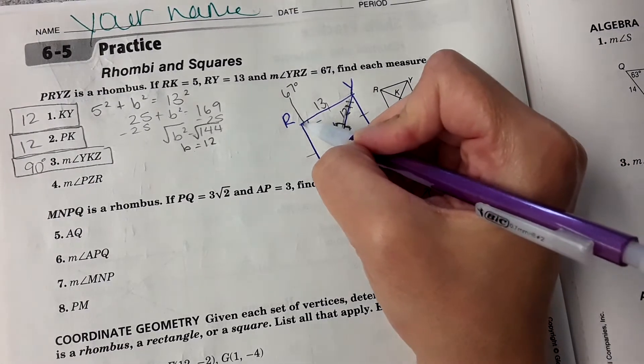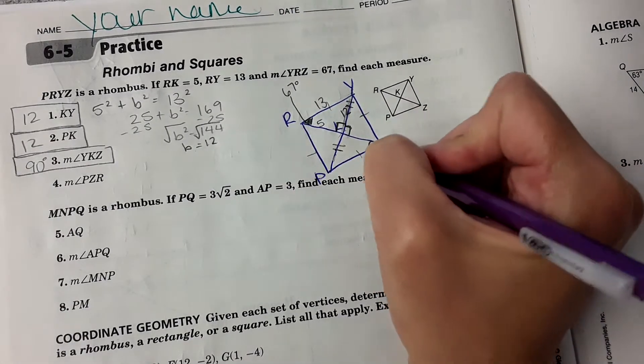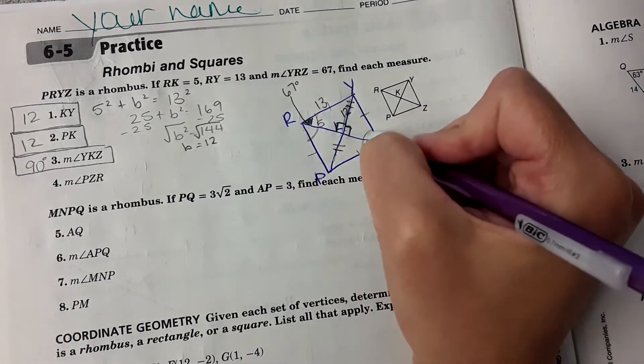And then PZR, so just this part of the angle. It told us that this part right here was 67 degrees. Just that part. Remember, these angles are the same measure, like the whole thing is the same measure.